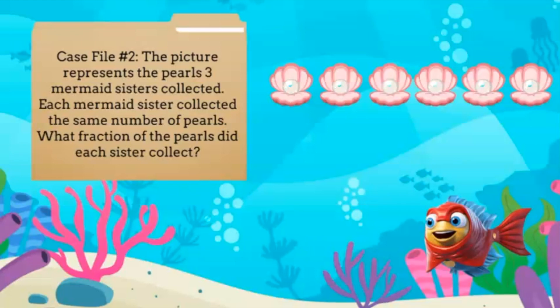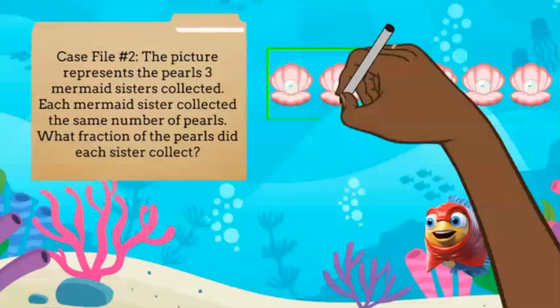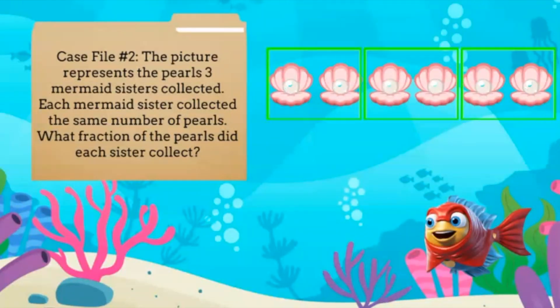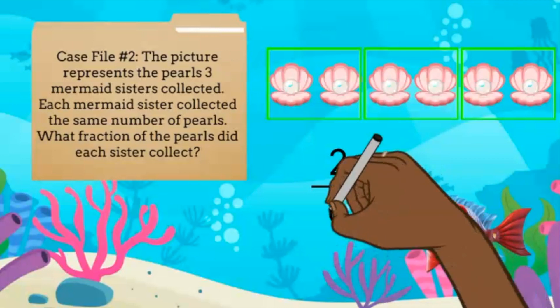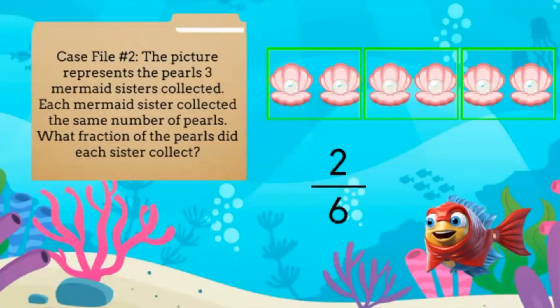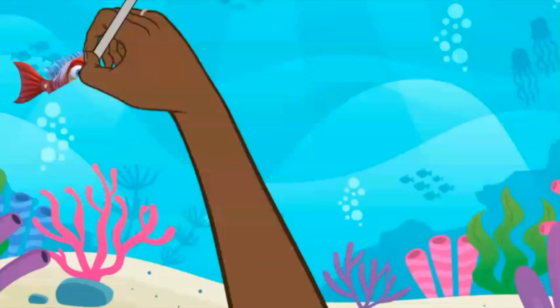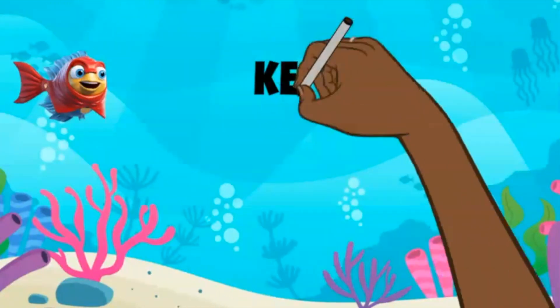There are six pearls in total and three sisters. I know that six divided by three equals two, so let's make groups of two. There are three groups of two. Each mermaid sister will receive two pearls, so two is the numerator and six is the denominator. Each mermaid sister collected two-sixths of the pearls. Thanks for joining me today — keep practicing!